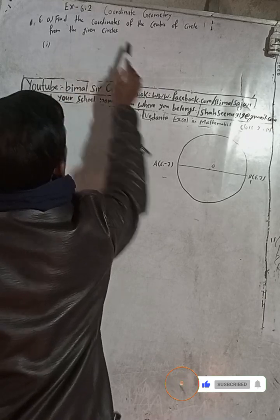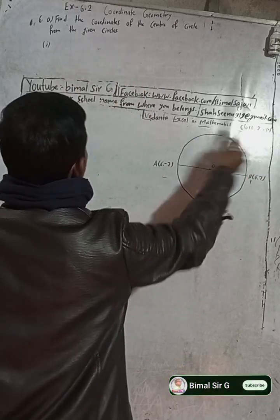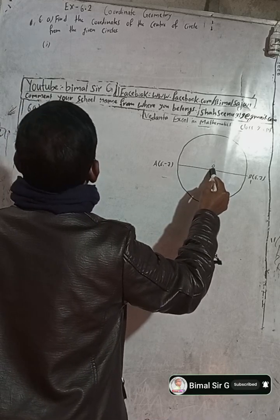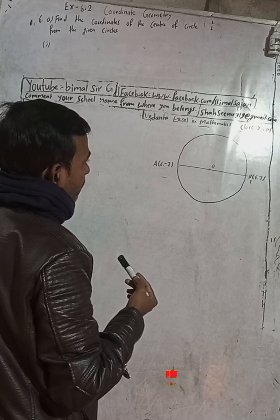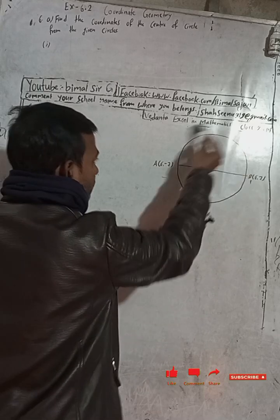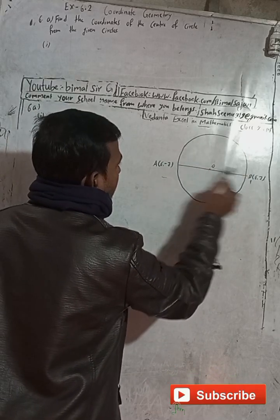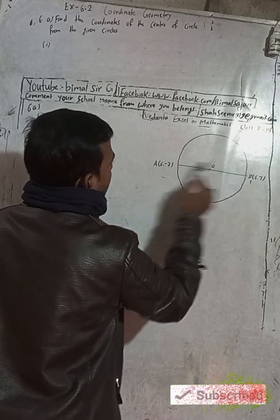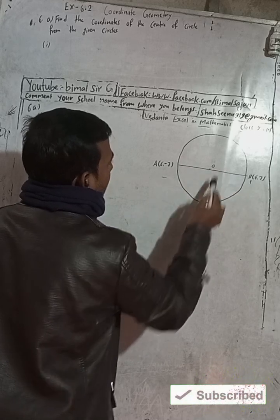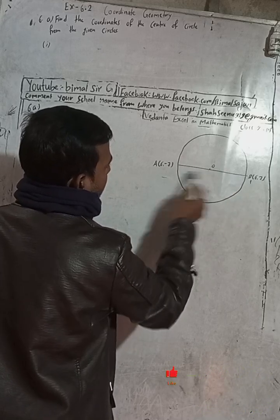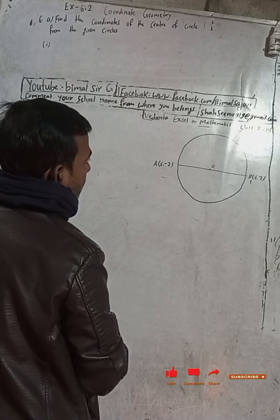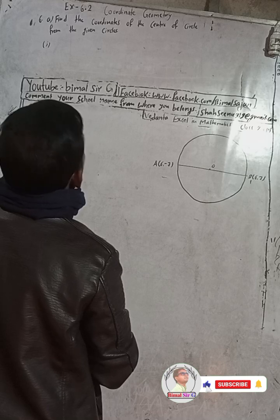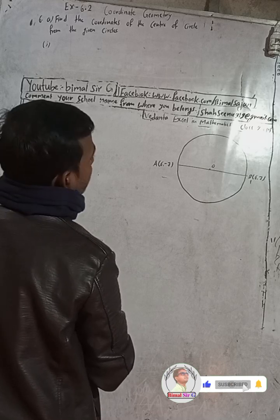We have to find the coordinates of the center. We know that in a circle, the center is the midpoint of the diameter. AB is the diameter, and the midpoint is always the center. So in the figure, O is the midpoint of AB.